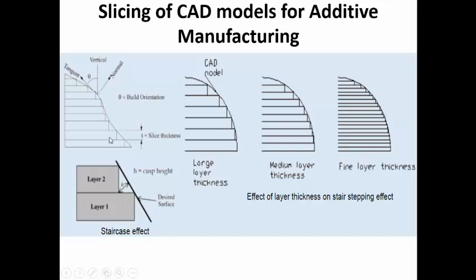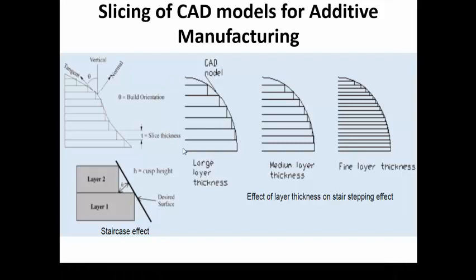If you reduce the slice thickness, the number of layers required to build the height will also increase. For example, if you have a component of 10 millimeter height and your current layer thickness is 1 millimeter, then you require 10 layers to create the component. If your layer thickness is 0.1 millimeter, then you have 100 layers to be produced.